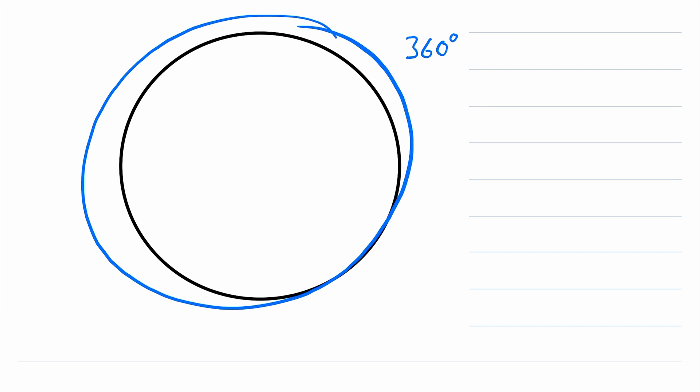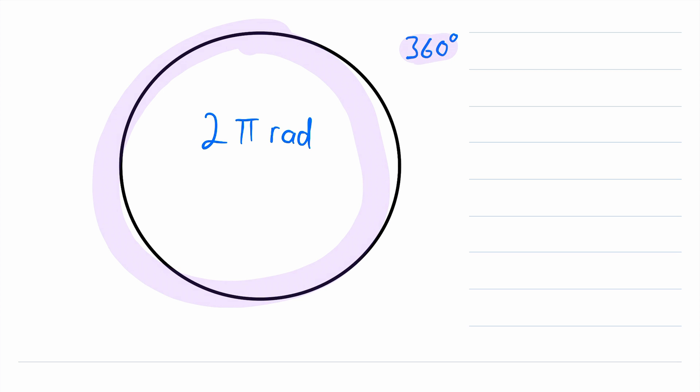How many radians are in a circle? Well you might know, maybe not, there are two pi radians in a circle. So a whole circle is 360 degrees or two pi radians. Those are equal measures, so we can write that 360 degrees is equal to two pi radians.